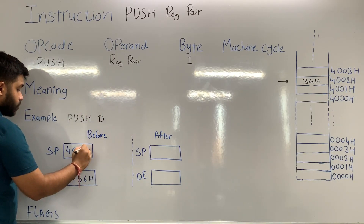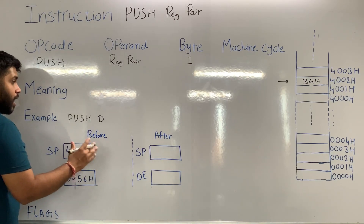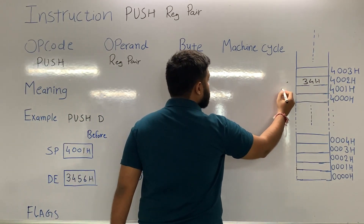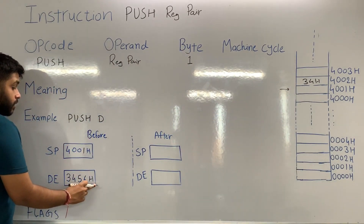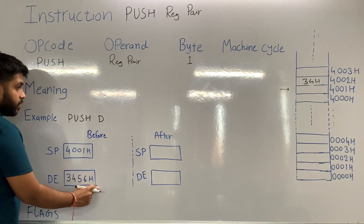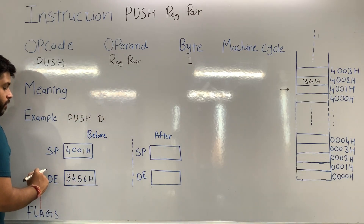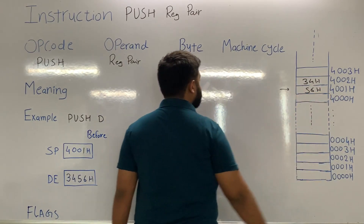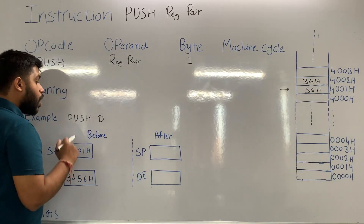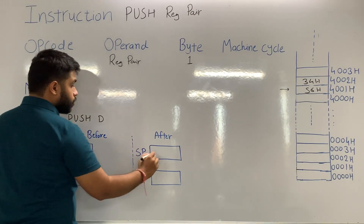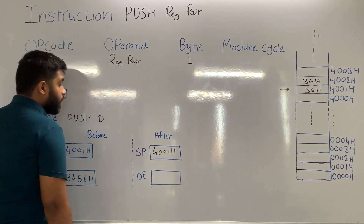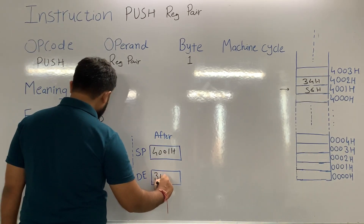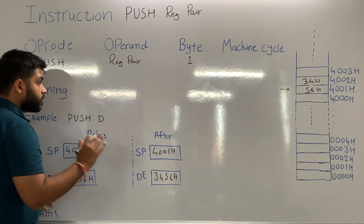After the higher byte 34H is stored, the stack pointer will be decremented by one again, so it will become 4001H. The stack pointer is now pointing to 4001H. The lower byte of the DE pair, which is 56H, will then be stored in the stack at 4001H. After execution, the stack pointer is pointing to 4001H and the content of the DE pair remains 3456H, since data is copied.